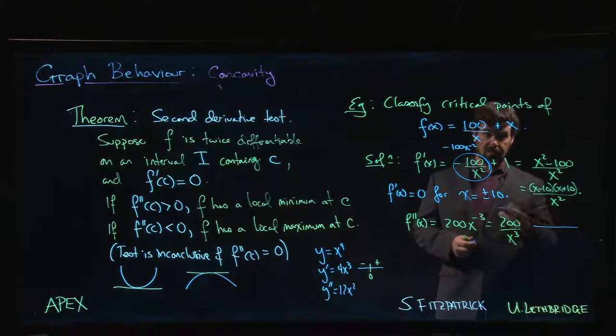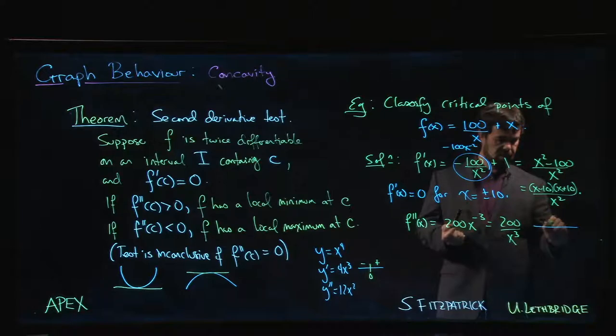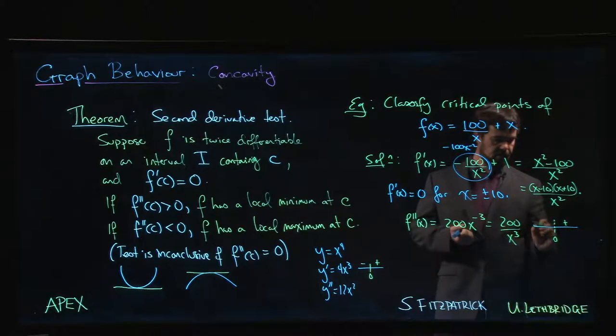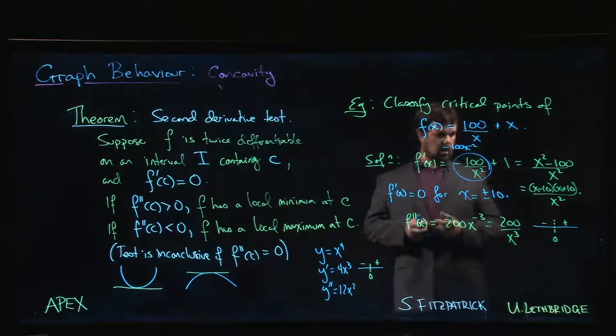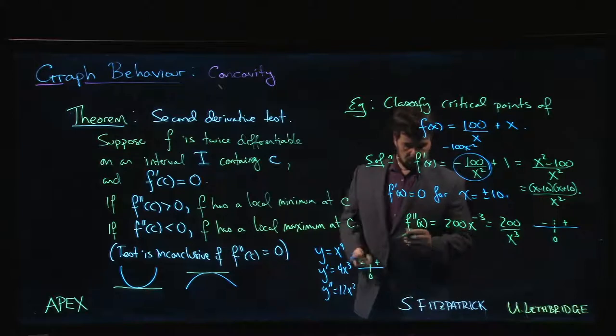The only place where we get a sign change for the second derivative is at 0, at that vertical asymptote. We can see that at that asymptote, if x is positive, x³ is positive, and if x is negative, x³ is negative. So we have a sign change at the asymptote—changes from negative to positive.